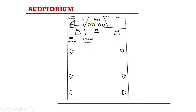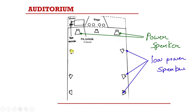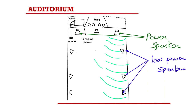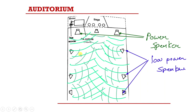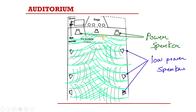In an auditorium there is a stage with high-power speakers that have higher power handling capability, and low-power speakers distributed throughout the auditorium. From the stage side the power speakers radiate sound with higher intensity. The stage structure is arranged in such a way that the sound generated by the speakers does not reach the microphone on stage.